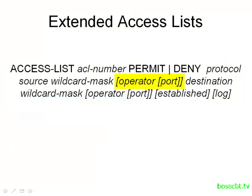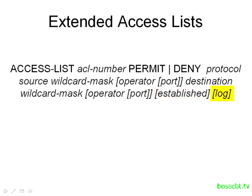After the source details, we move into the destination. The source, the source's wildcard mask, and the operator and port all deal with the source of the IP packet. Then we simply repeat all of that for the destination: a destination IP, a wildcard mask, and an operator and port. Finally, there is an optional 'established' keyword, meaning devices on the inside can establish sessions outward and return traffic is allowed back in, but outside devices cannot initiate sessions inward. There is also an optional 'log' keyword that logs a message whenever a packet matches a statement, which can be very useful for troubleshooting.